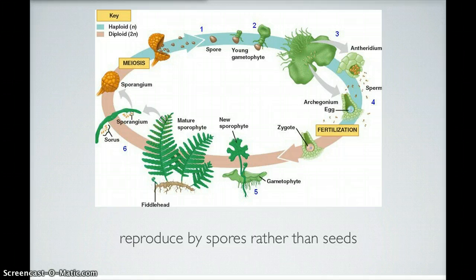The spores, when dispersed to a suitable habitat, will germinate to form a bisexual or hermaphroditic gametophyte. That is where the haploid and diploid parts fit in.